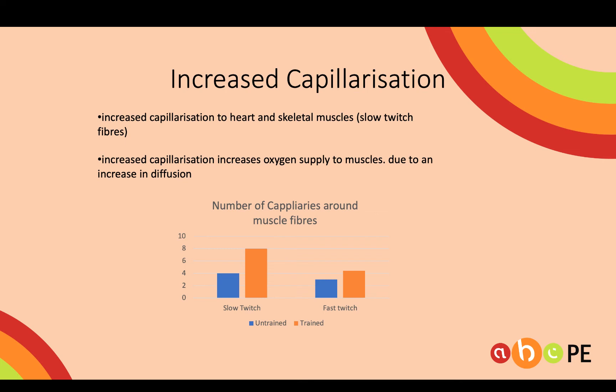Next are the vascular adaptations. One is increased capillarisation — capillaries are the areas for diffusion, so more capillaries means more oxygen diffusing into the muscles, which means more O2 for aerobic ATP resynthesis. Slow-twitch muscle fibres, because they are the ones that use the oxygen, will see greater improvement through training than fast-twitch fibres.